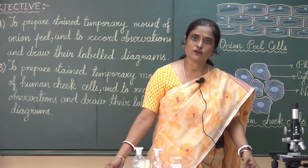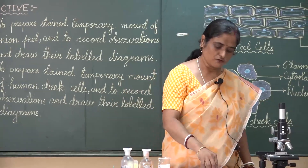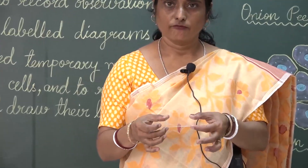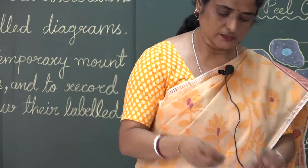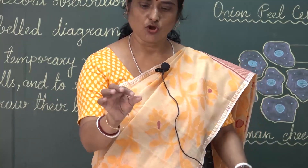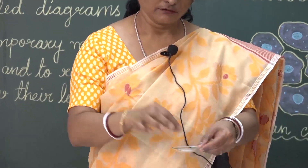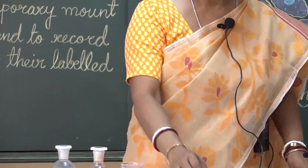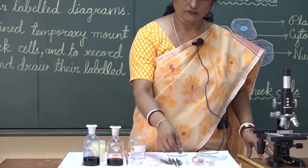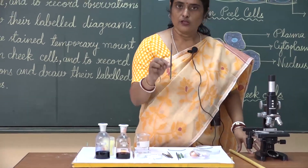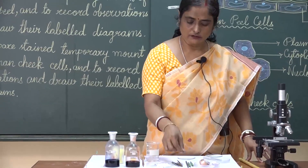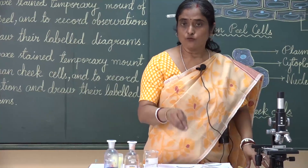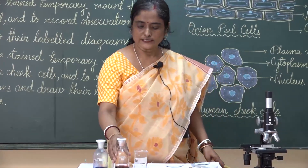What are the materials required for the experiment? First of all, we need a slide. We need cover slips — these are very small, thin cover slips. We need the specimen, onion. There is a needle required, a brush is required, a forcep is required, and more importantly, we need a stain also.